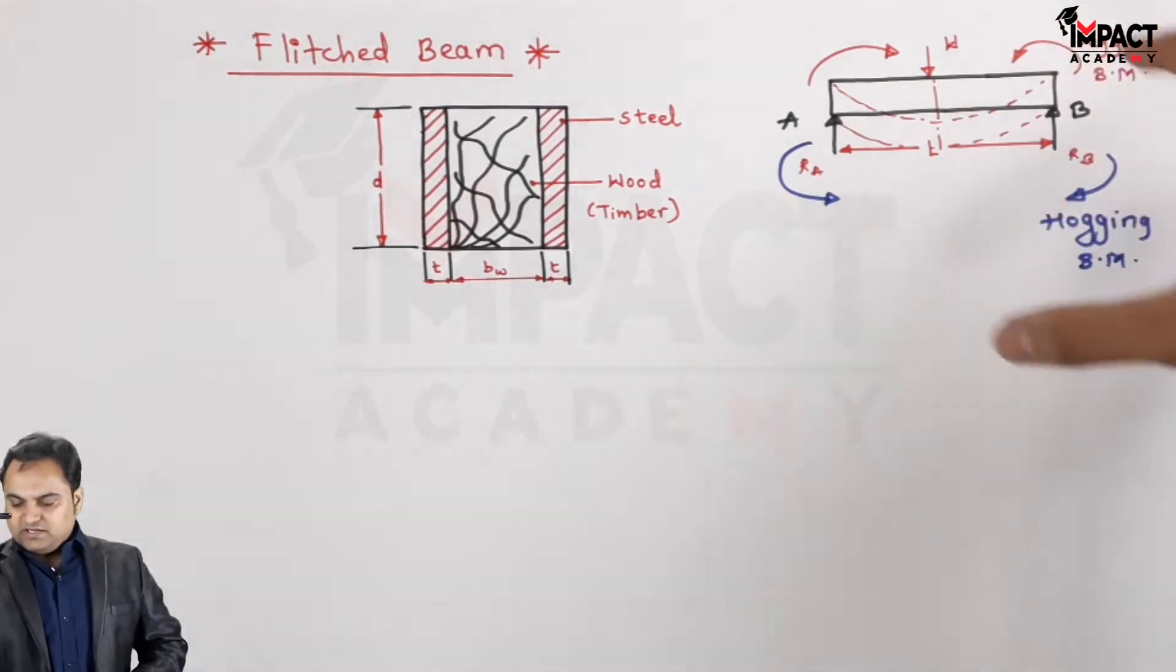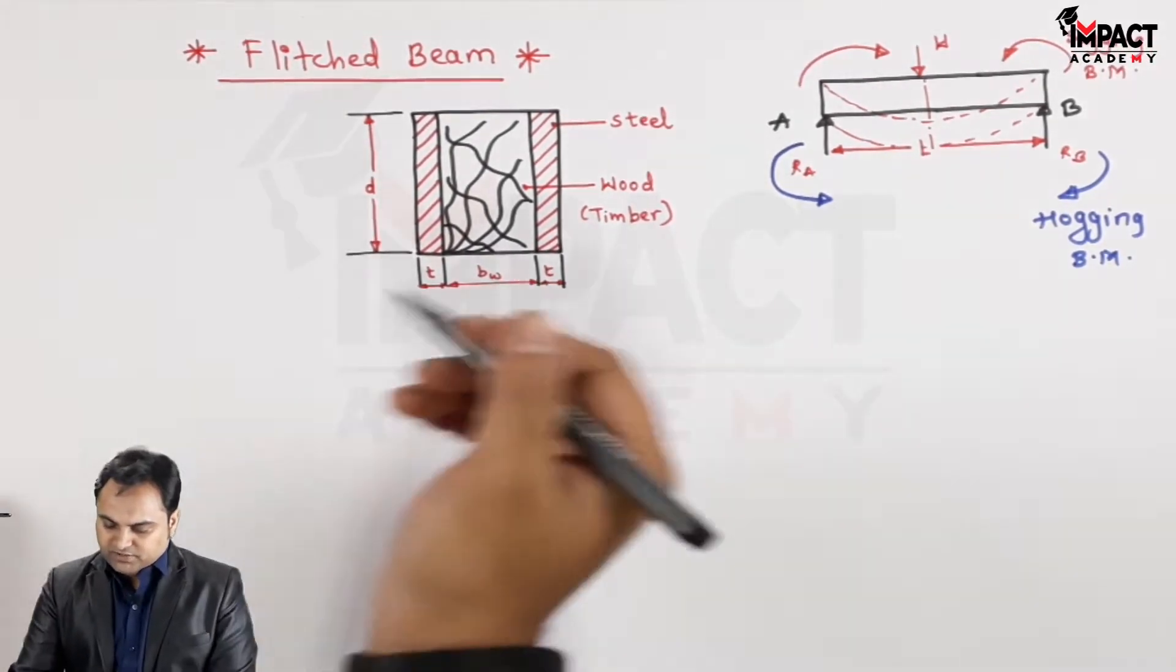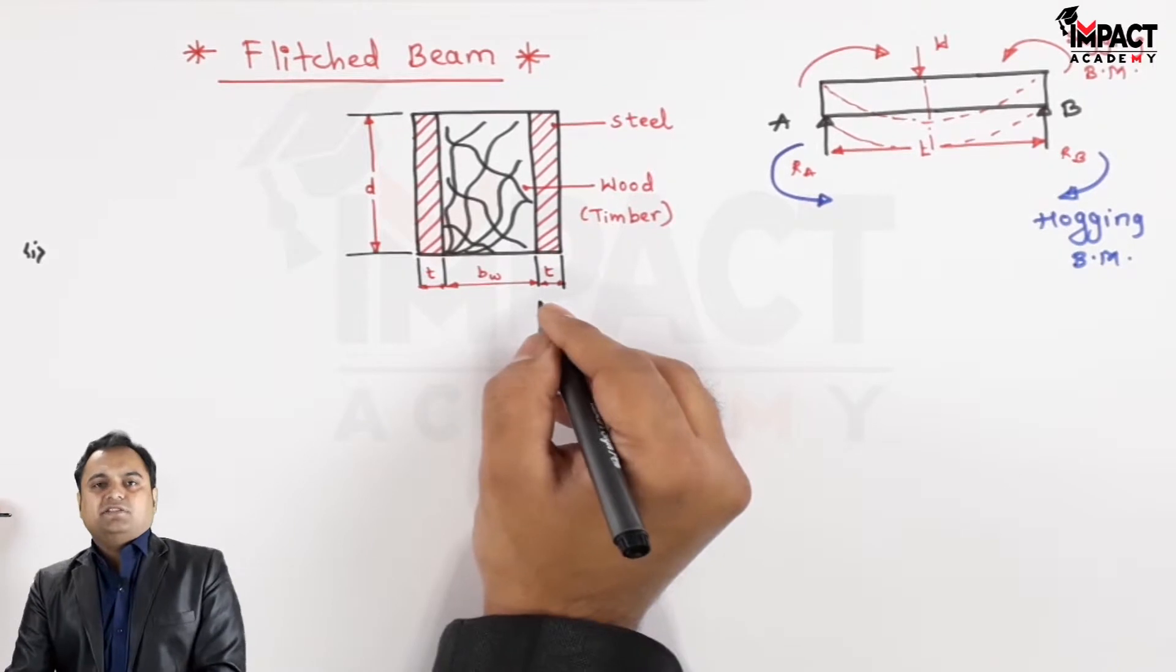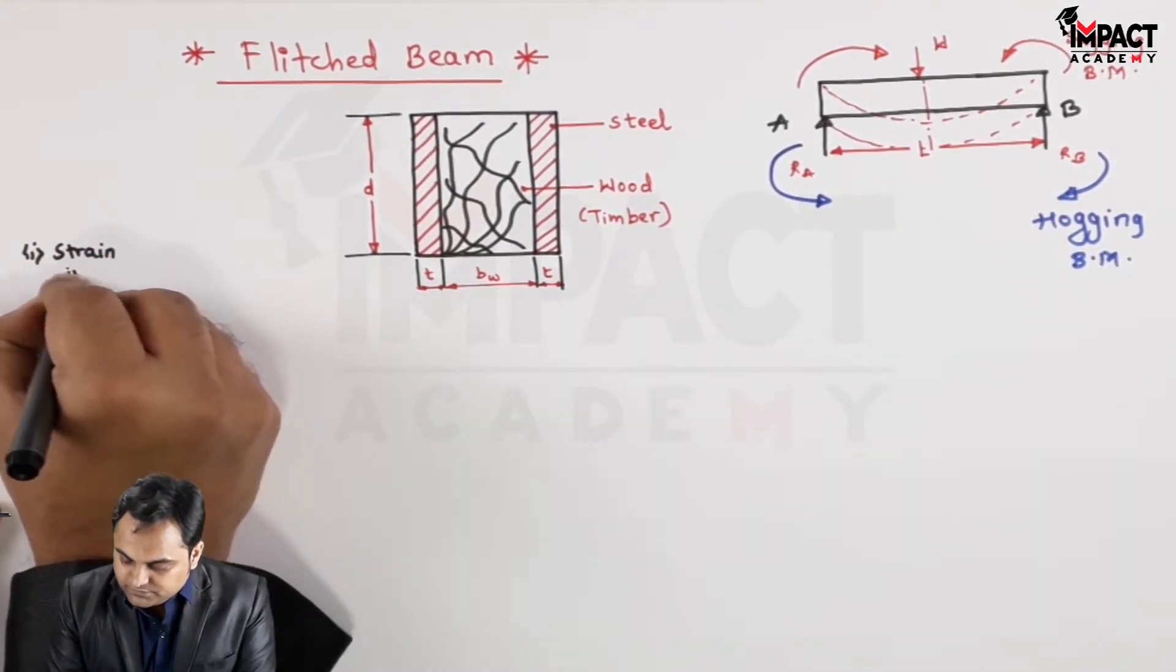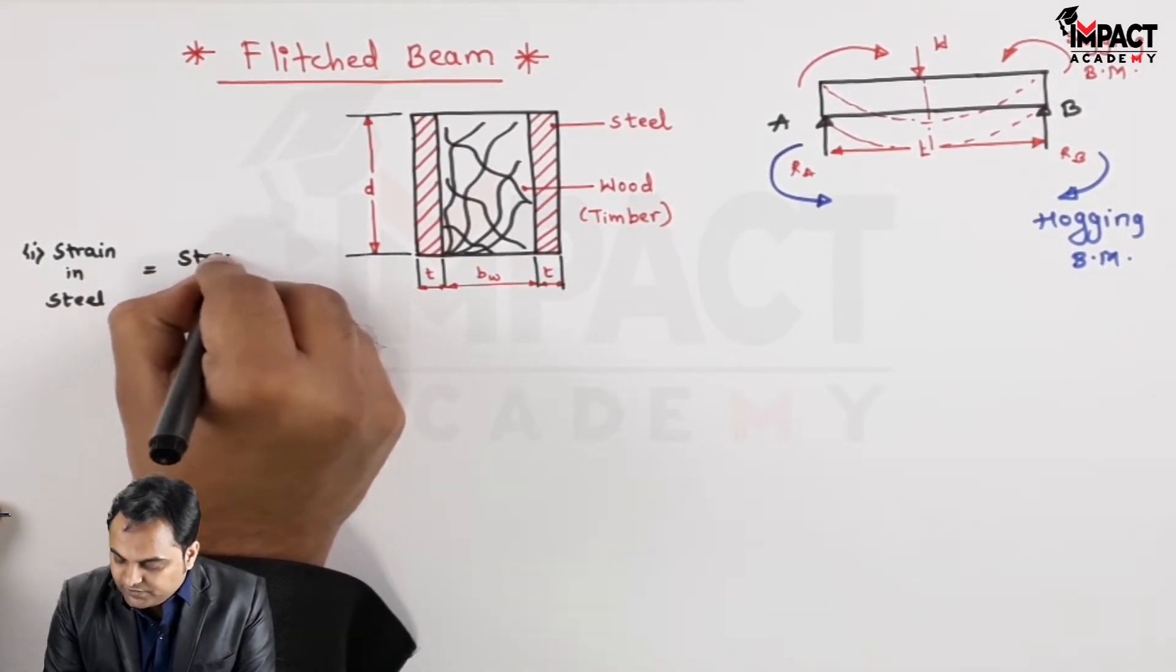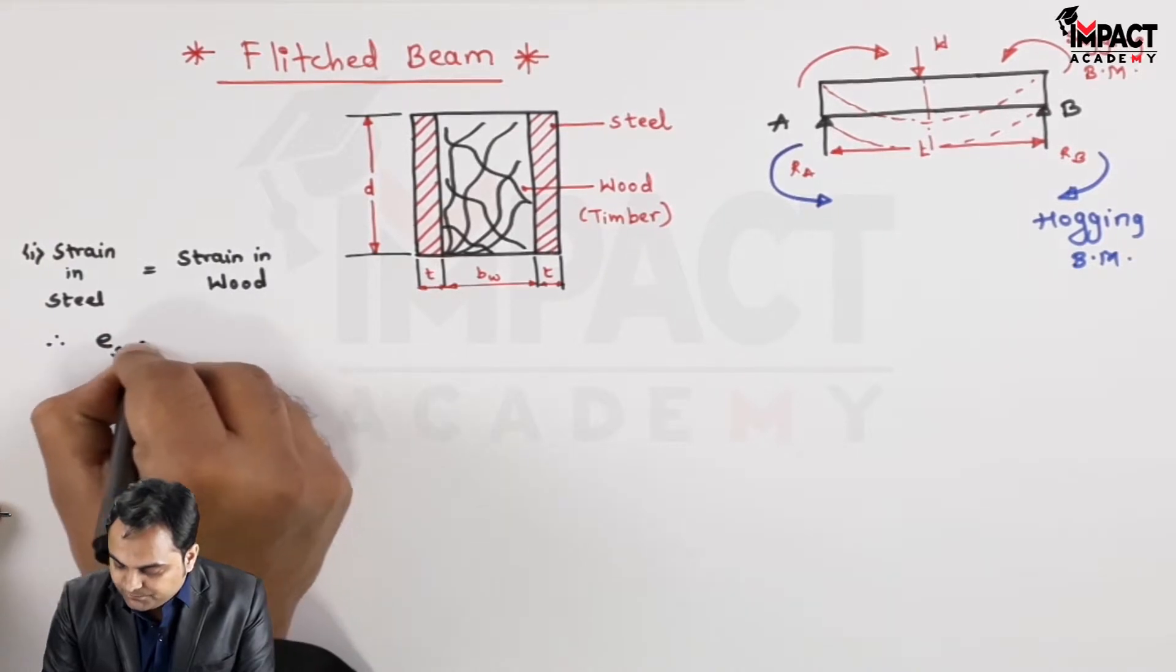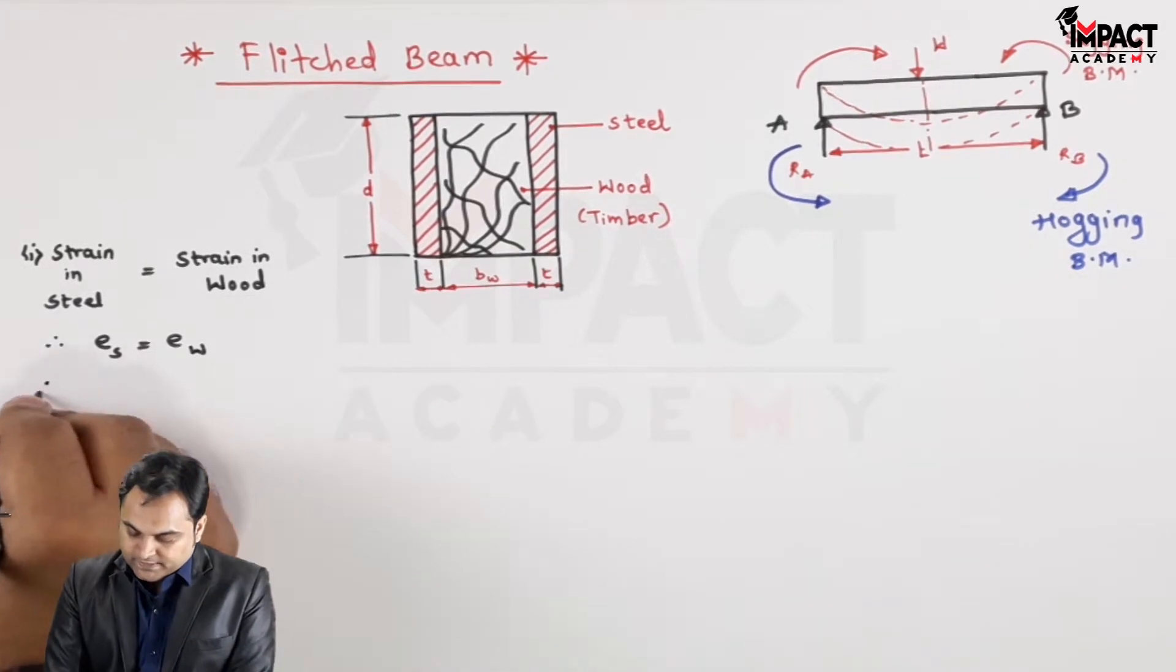Now once the concept has been understood, here one thing we have to remember that in case of flitched beams, the strain in both the materials are same. That is strain in steel is equal to strain in wood or timber. Strain is denoted by small ε. I am adding the suffix s for steel and w for wood.